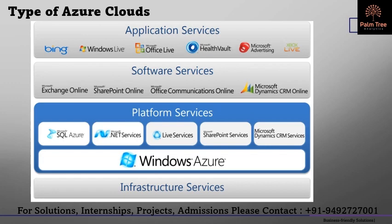PaaS is a computing platform which includes an operating system, programming language execution environment, database, or web services. This Azure service is used by developers and application providers. As its name suggests, this platform is provided to the client to develop and deploy software. It is one of the Azure basic concepts which allows the client to focus on application development instead of worrying about hardware and infrastructure.